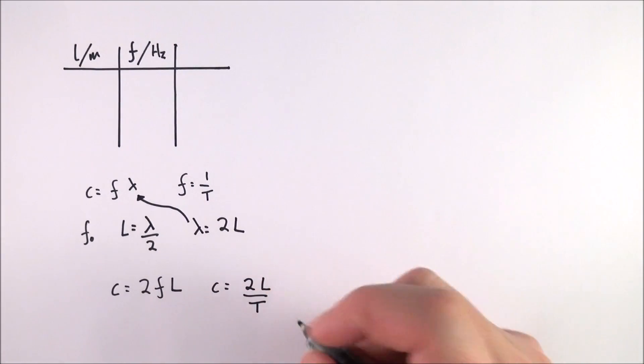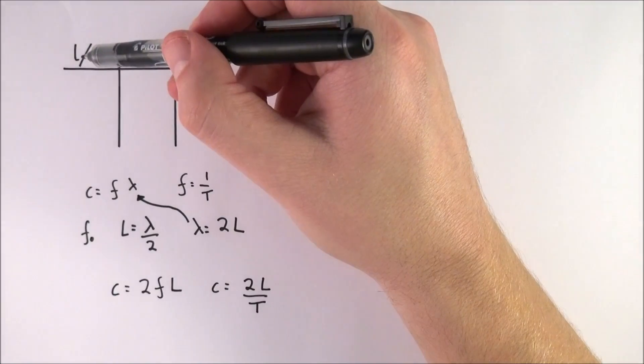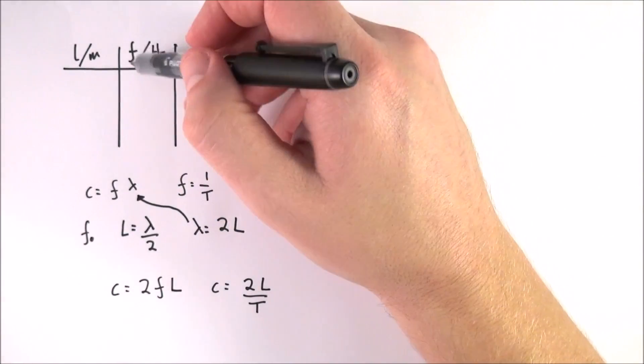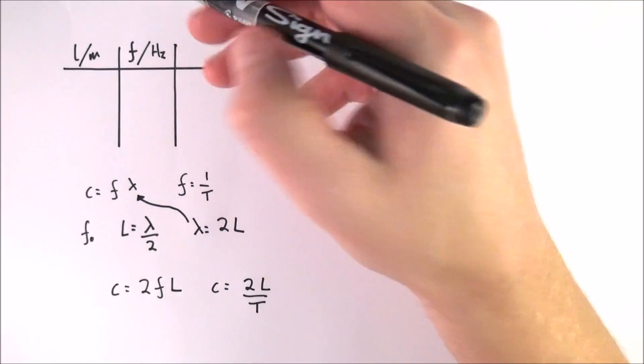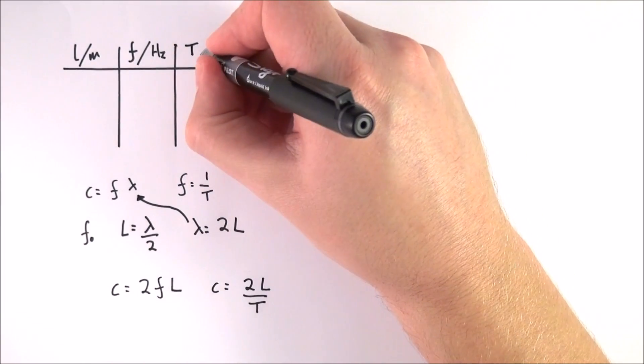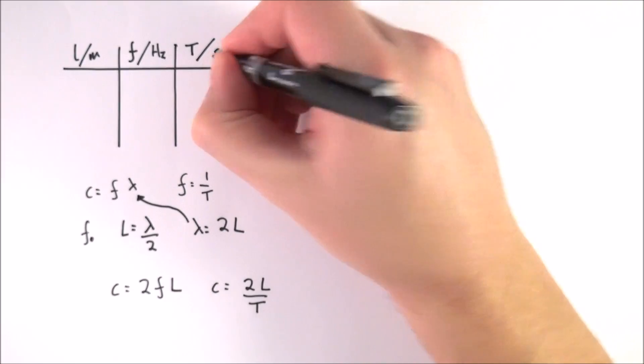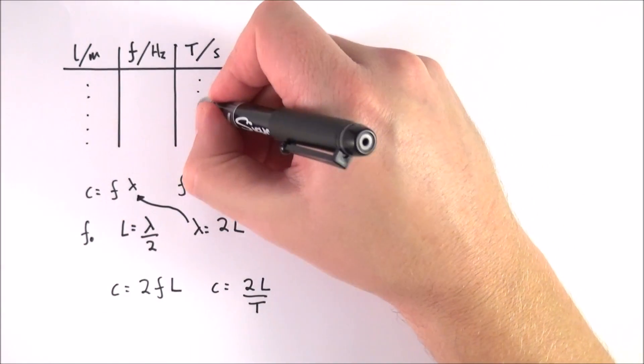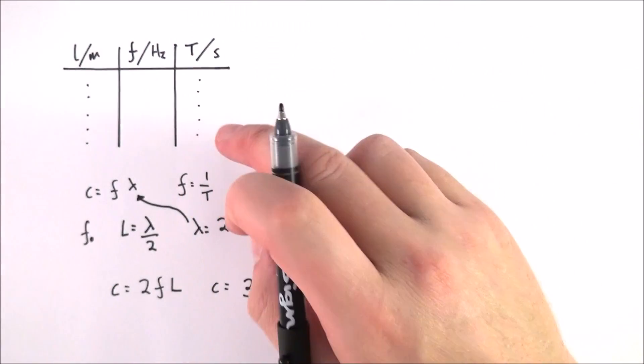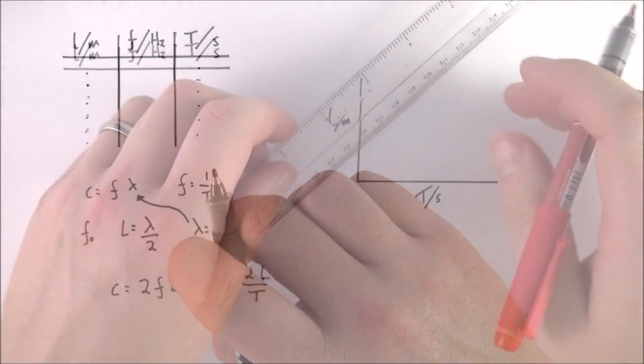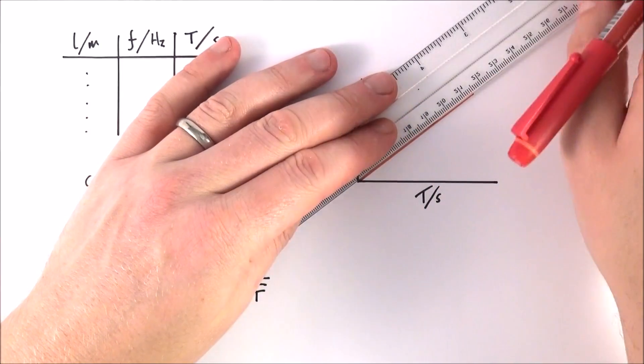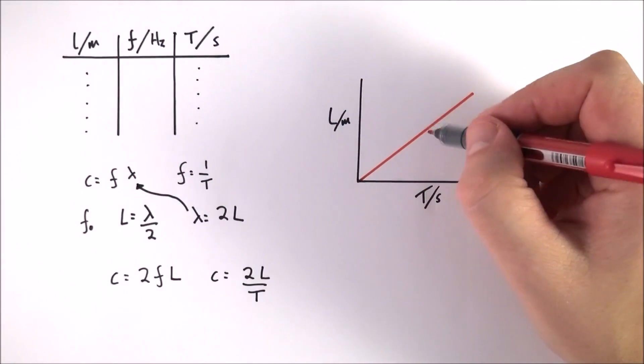L is what we're varying, and you can go from a value of maybe one meter down to maybe half a meter. You can measure your values of the fundamental frequency and therefore the time period, which is in seconds. You can have various values for L and various values for T. What you can then do is plot this onto a graph. What you should find is that you should get a straight line going through the origin.